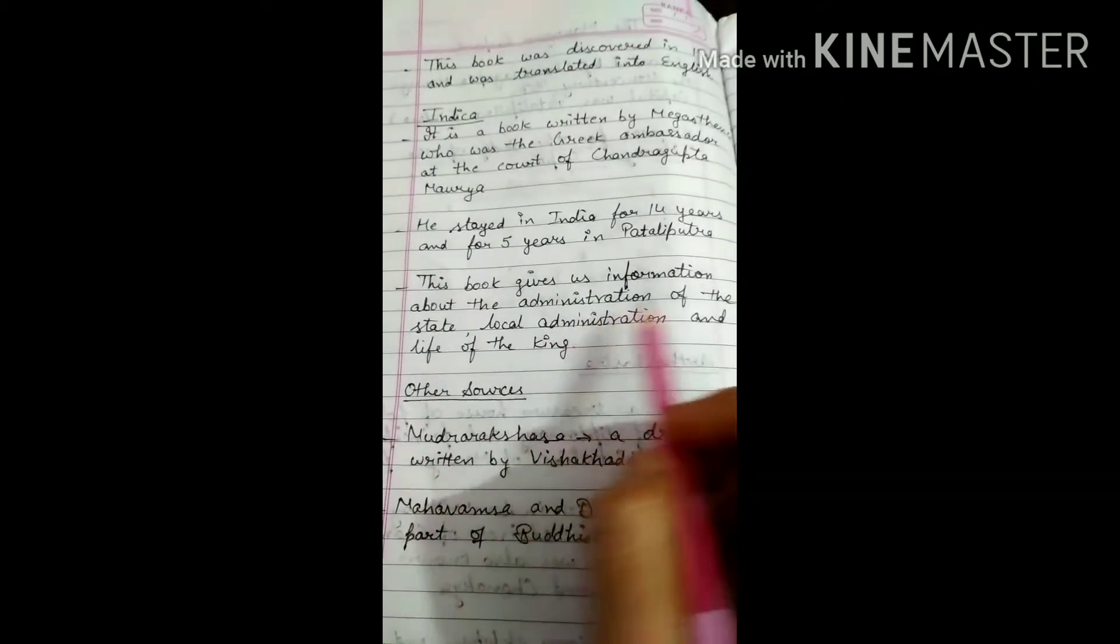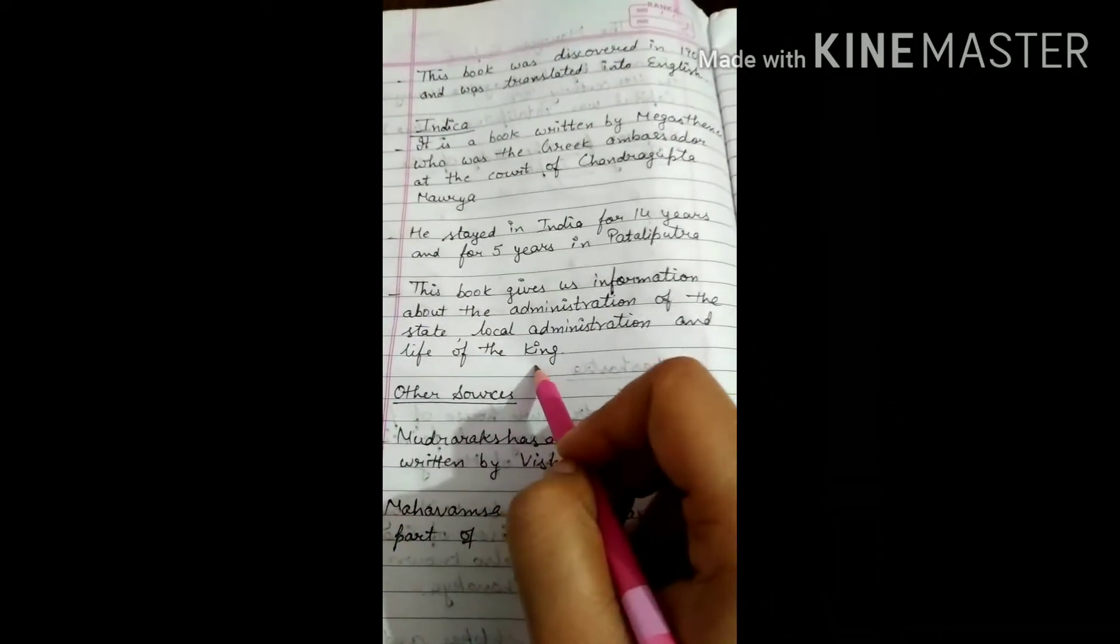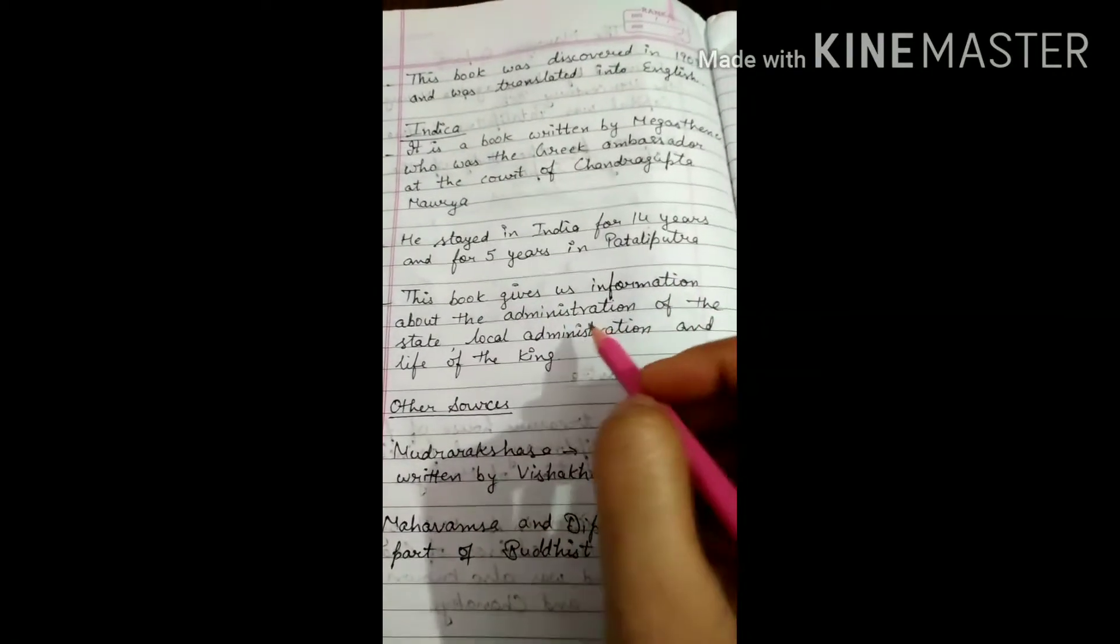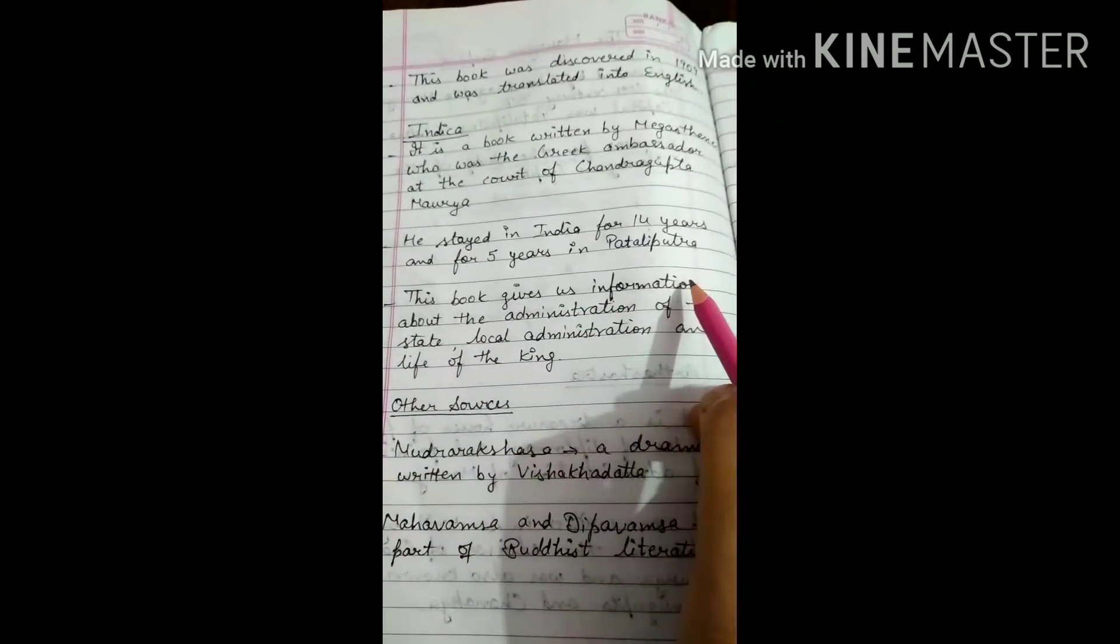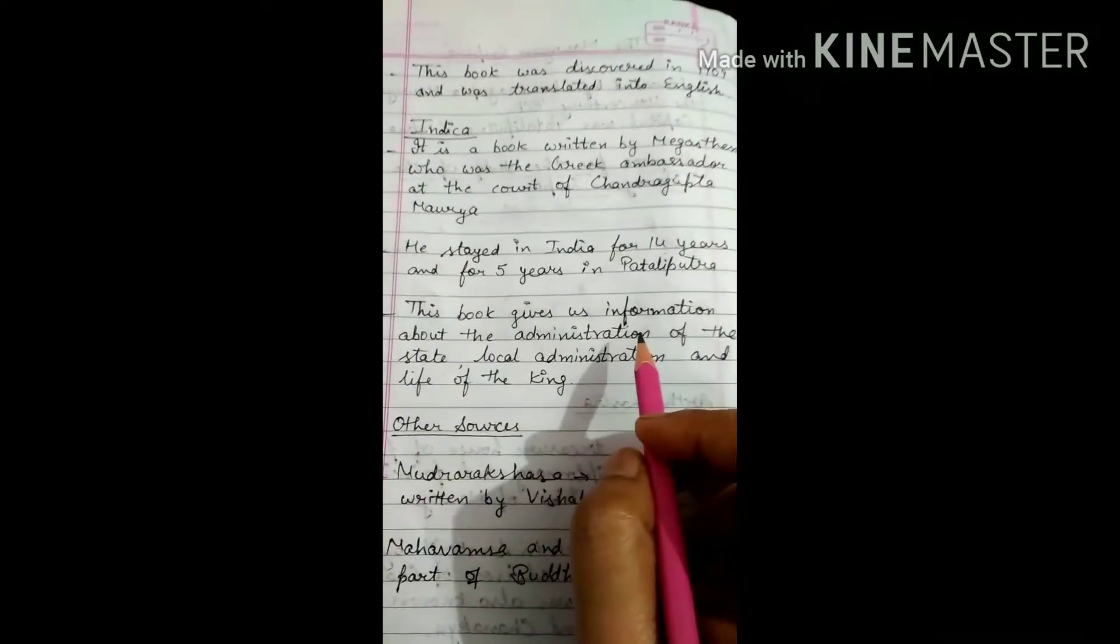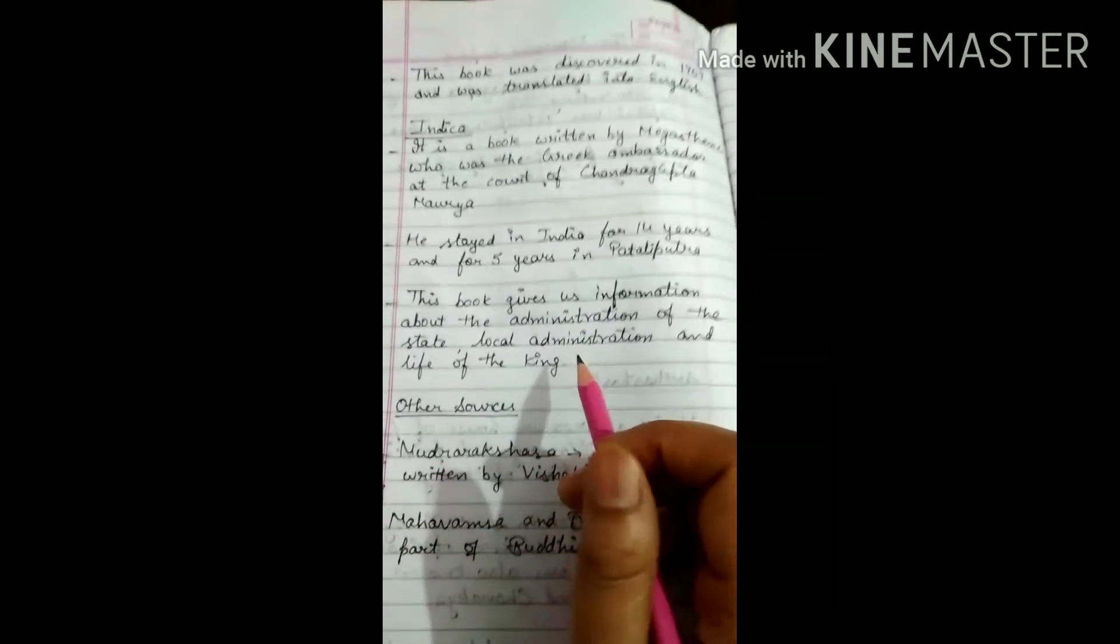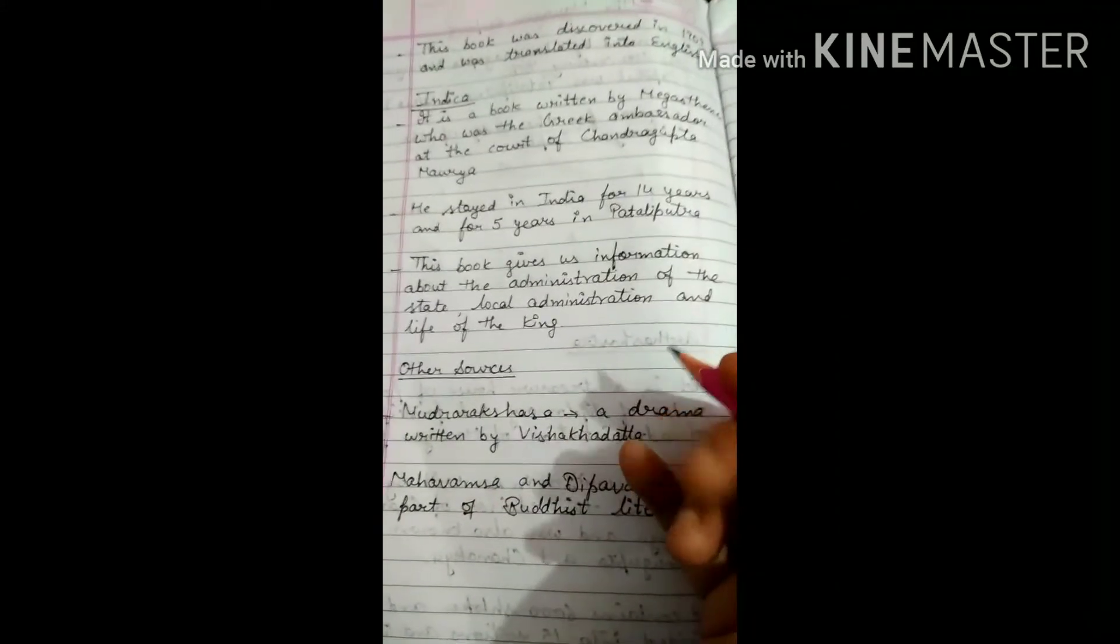This book gives us information about the administration of the state, local administration, and life of the king. He observed the king's rule, administration, and local administration. This is his experience of India that is called Indica. The true version is not available, but some Greek scholars have copies of it from which we get information about it.